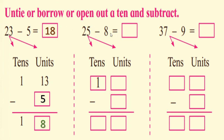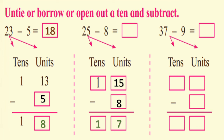Second: 25 minus 8 equals how much? In the unit place, 25 gives us 15 units and 1 ten. Minus 8 is given. 15 minus 8: count forward from 8 — 9, 10, 11, 12, 13, 14, 15 — that is 7 fingers, meaning 7 units. The ten remains as 1. So 25 minus 8 is equal to 17.